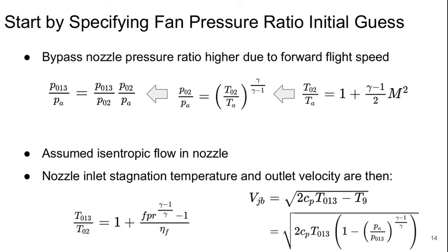We do this by starting to specify a fan pressure ratio as an initial guess. Again, the bypass nozzle pressure ratio is higher due to the forward flight speed. So it's the conditions into the nozzle. This is the product of the fan pressure ratio and the effect of forward flight speed. We'll assume that the flow in the nozzle itself is isentropic. So then we can directly get our nozzle inlet stagnation temperature and outlet velocity if we have a fan efficiency and fan pressure ratio. And then we can write this in terms of the outlet velocity. So this is the bypass jet velocity.